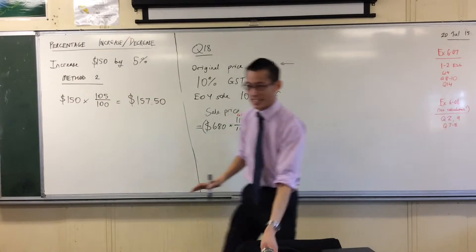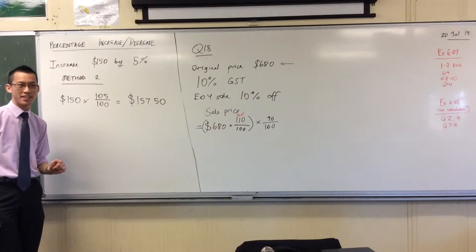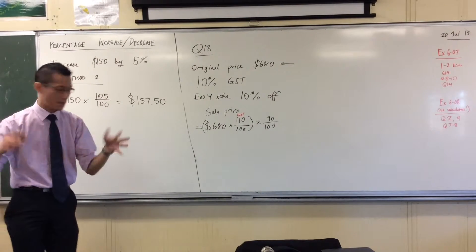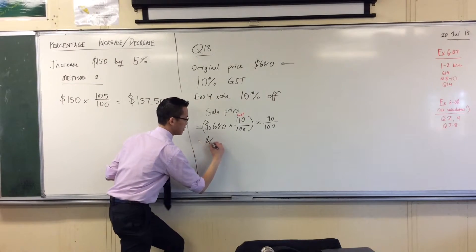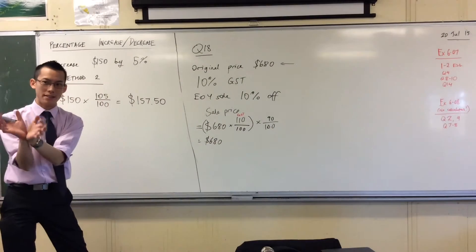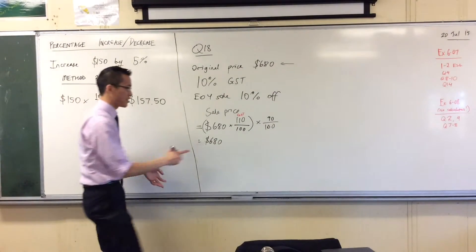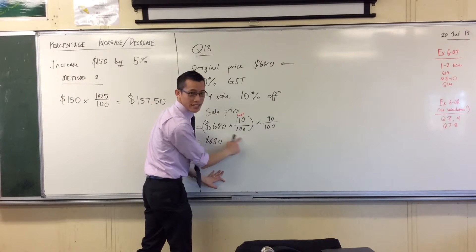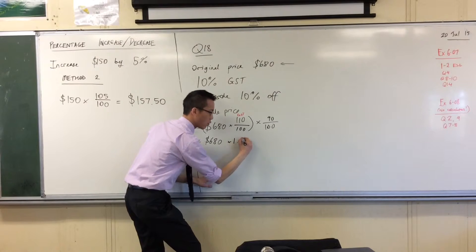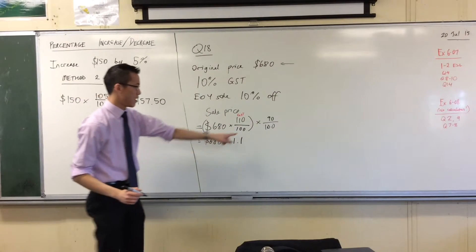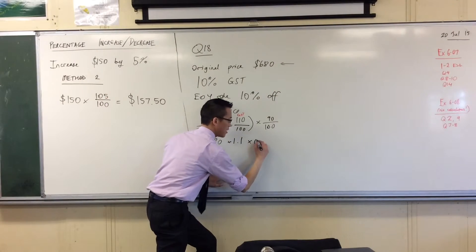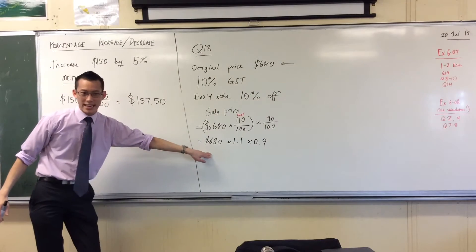So now, before I actually calculate this, because I could spin this into my calculator, I'm going to try and work out what it is without a calculator, because then we can get some insight here. So I've got 680. Now what are these two? We've seen this. I showed you how to write these as decimals as well as fractions. 110 over 100, what's that as a decimal? It's 1.1. 90 over 100, what's that as a decimal? It's like 0.9.